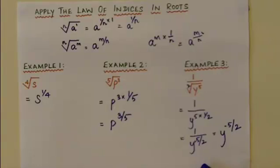In case you decide to move this variable to the numerator, it becomes y to the power of minus 5 over 2.